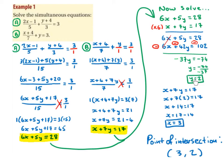Substituting y equals 2 into x plus 7y equals 17: swapping y for 2 gives x plus 7 times 2 equals 17. 7 times 2 is 14, and 17 minus 14 is 3, so x equals 3. The point of intersection is (3, 2).